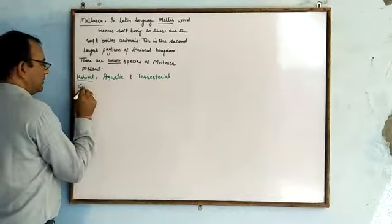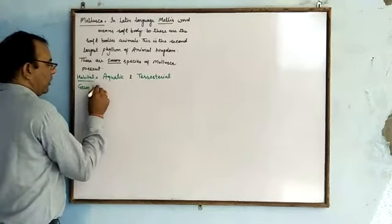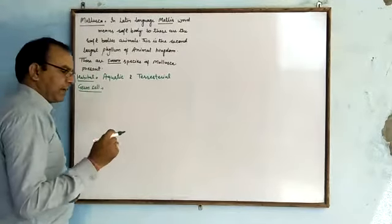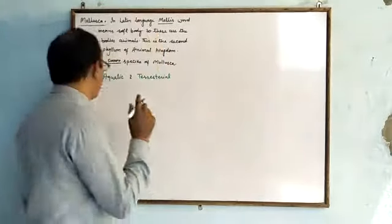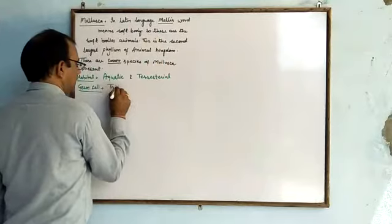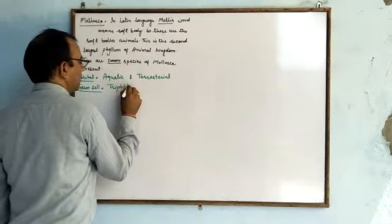Second, germ layers. The germ layers of these animals are made up of three layers: ectoderm, mesoderm, and endoderm. So they are triploblastic.